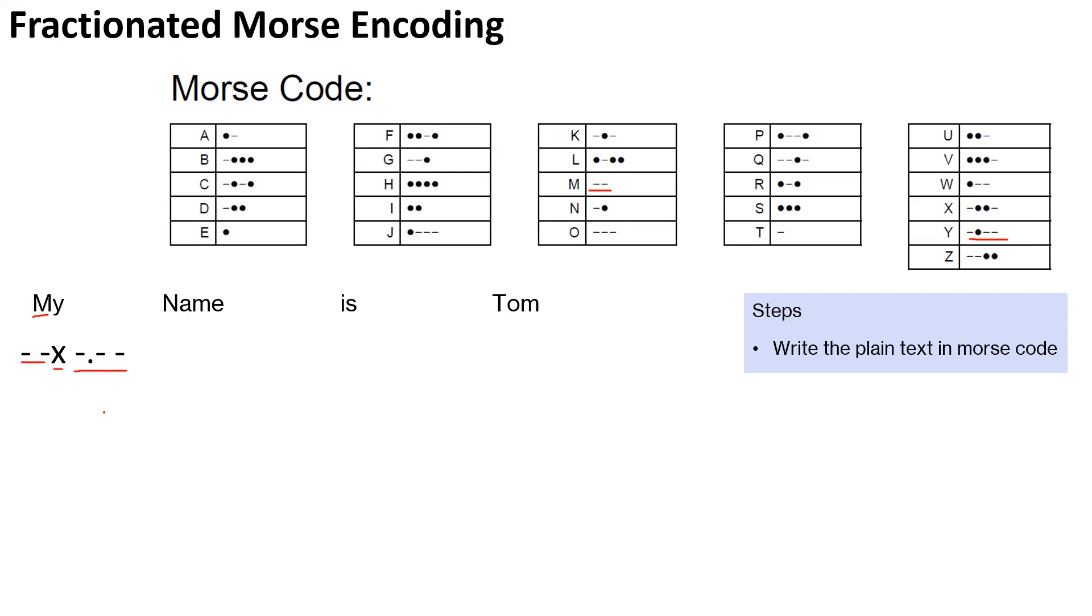And at the end of each word, there is an additional X. So here we will have two crosses to indicate that the word is ended. Now, we'll continue here. Name is dash and dot. A is dot and dash. M is again two dashes. And E is a dot. So we'll continue. Go ahead and do that.